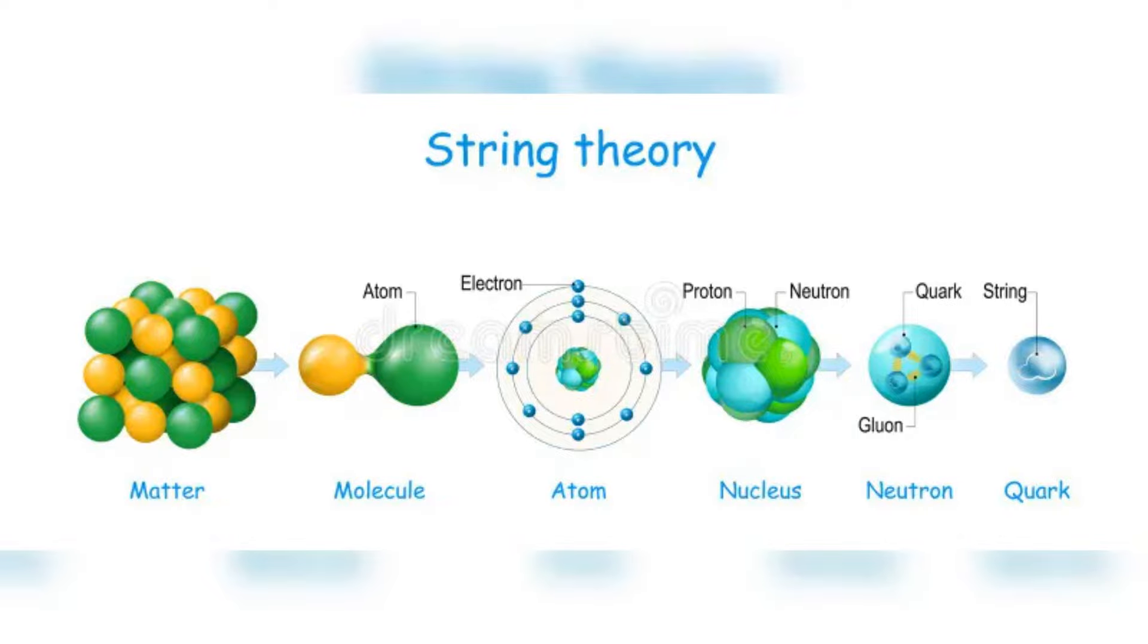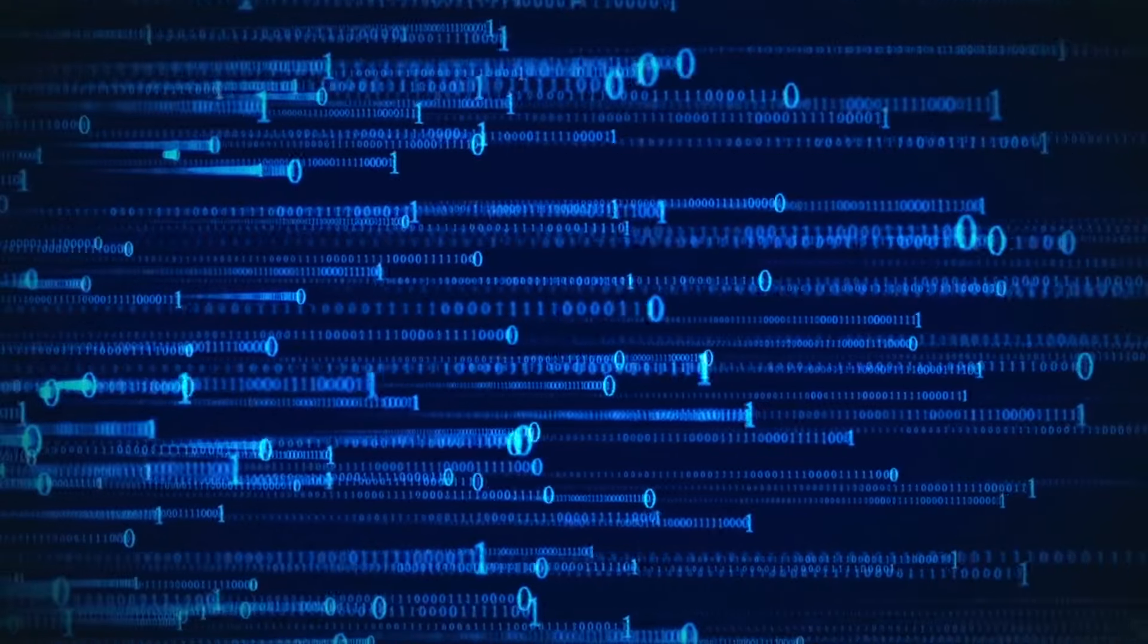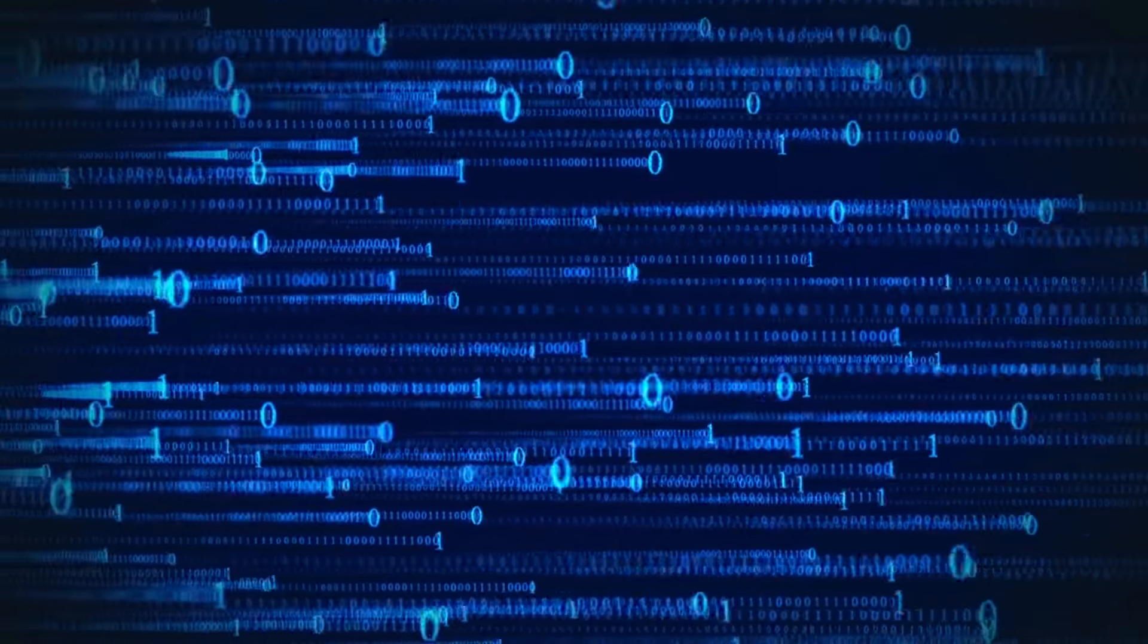Furthermore, string theory encompasses a vast landscape of possible solutions, often referred to as the string landscape. This landscape includes an enormous number of different possible universes with varying physical constants and properties. This multiplicity of solutions complicates the task of making specific testable predictions.